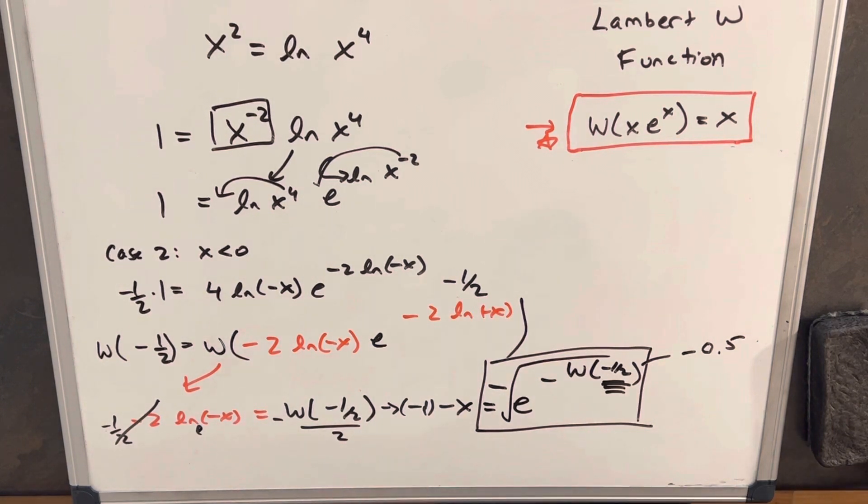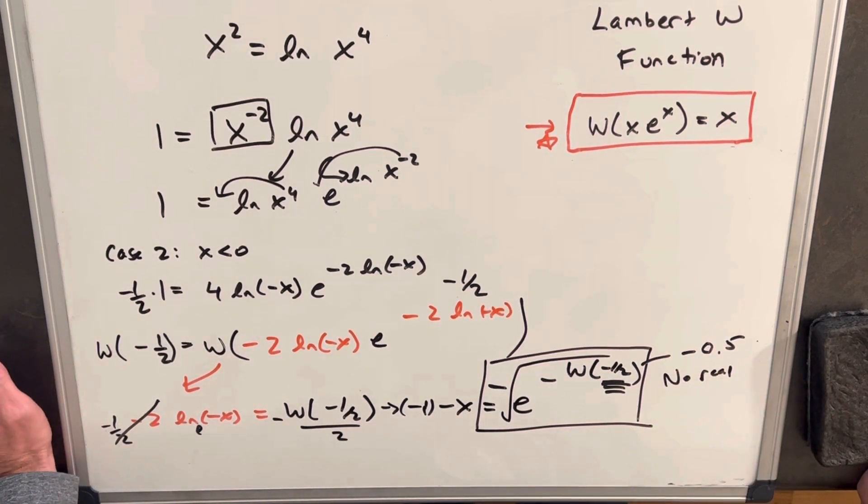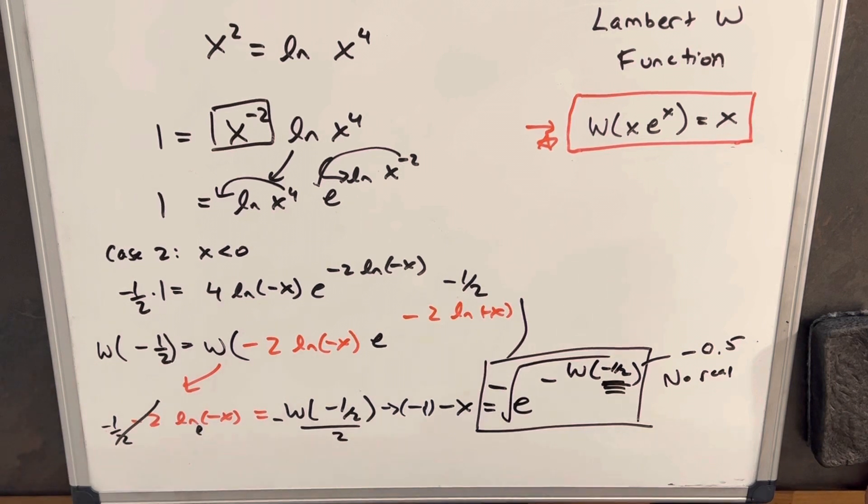We need it to be greater than negative 1 over e, which is negative 0.368. So again, we have no real solution. So in both cases, no real solution, and so there's going to be no solution in the real numbers.